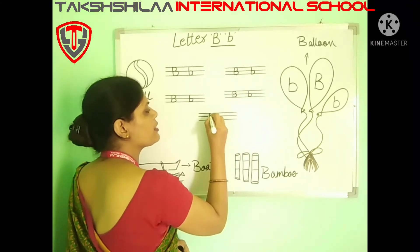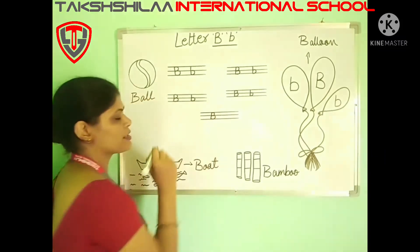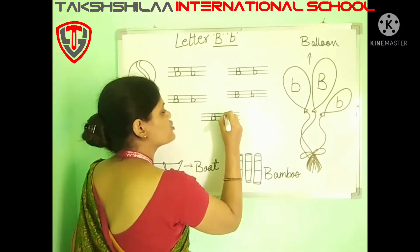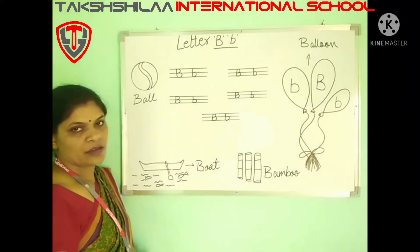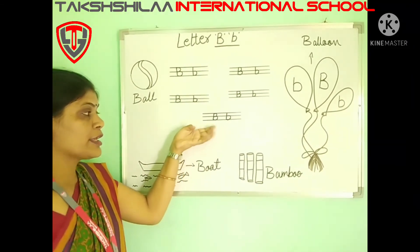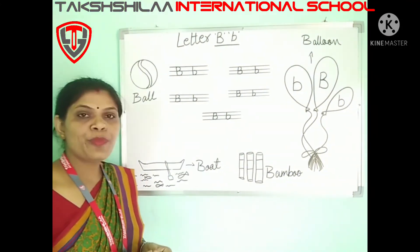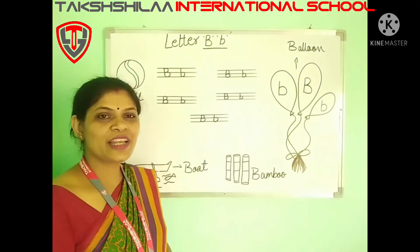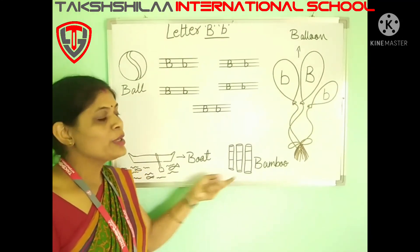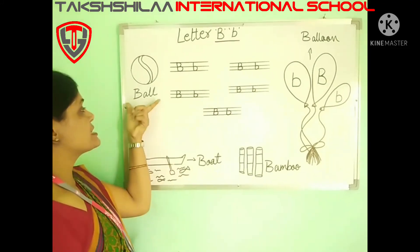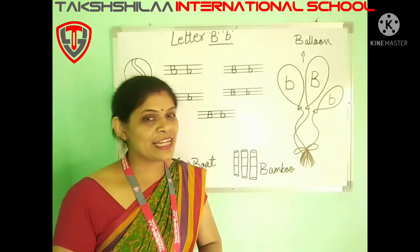Capital B kaise likhte hain? Standing line, one half circle and one more half circle — that is capital B. And small b: standing line and only one half circle. So do practice at your home. B stands for balloon, B stands for bamboo, B stands for board, B stands for ball and B stands for banana. That is all for today's class. Bye!